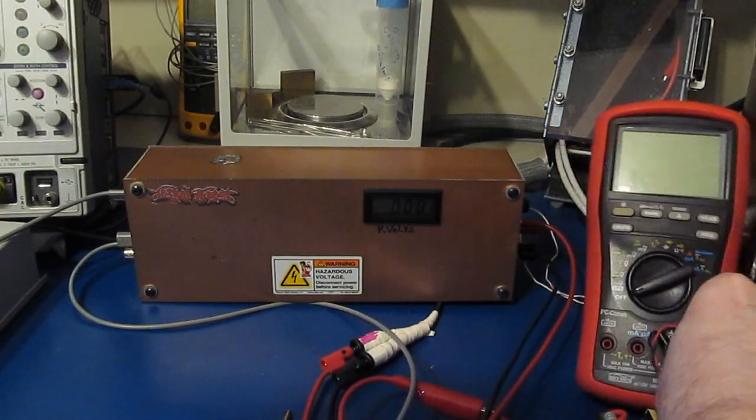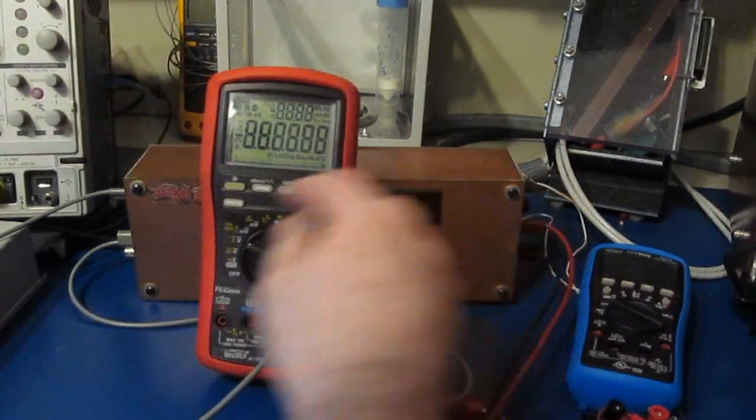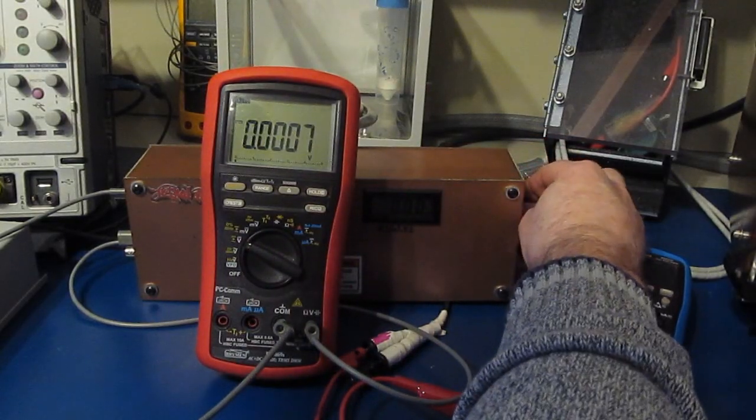Somebody else had asked about the BM-869S. So the first thing I'm curious about is what is the breakdown voltage of the MOVs for this particular meter.